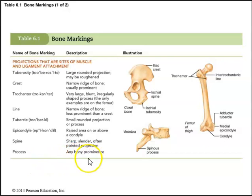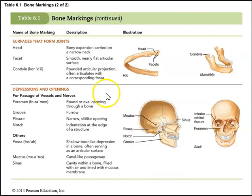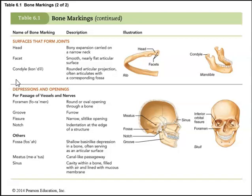Bone markings that form joint surfaces include: the head (a bony expansion carried on a narrow neck, as seen on the rib); facets (smooth, nearly flat articular surfaces that articulate with other bones); and condyles (rounded articular projections that often articulate with a corresponding fossa of another bone).